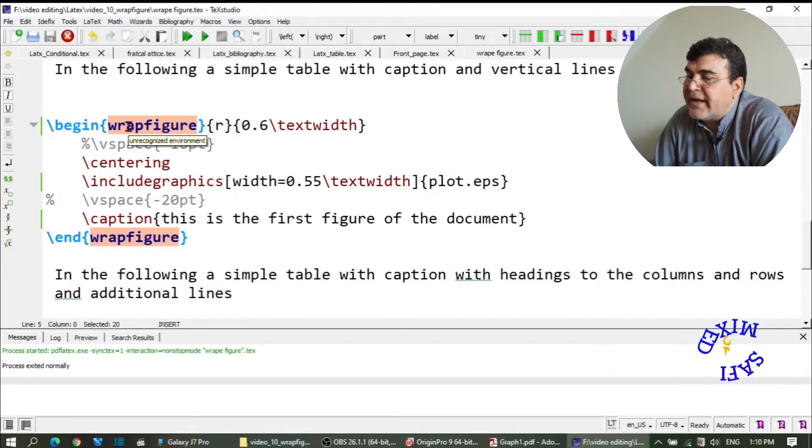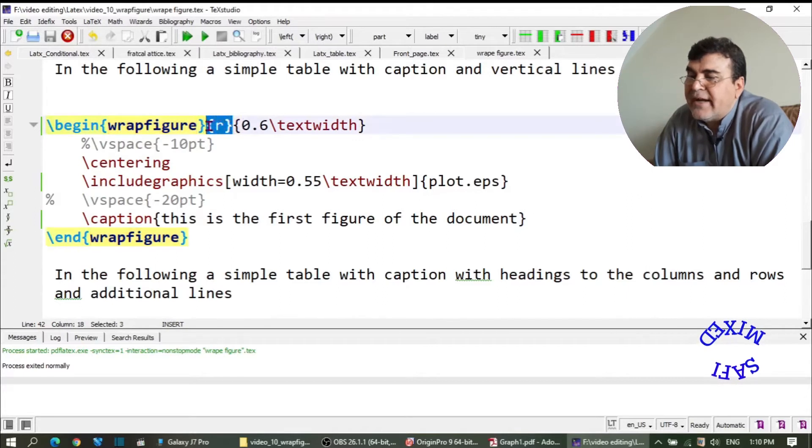wrapfigure, which I am using here as begin wrapfigure. Then this argument defines the position of your figure. Here I have put R, meaning keep the figure to the right of the text. This is the size they